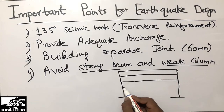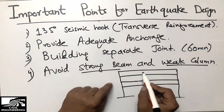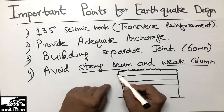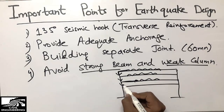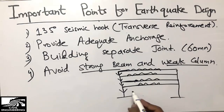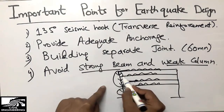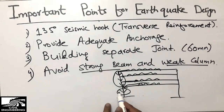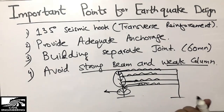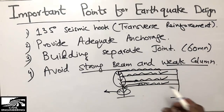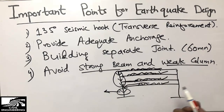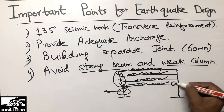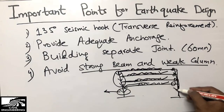In a multi-story building, the load from each beam is transferred to the column. As you go down, each column accumulates the load from all the beams and columns above it. So the lower columns carry the combined load of all the floors above, while each beam only carries the load from its own floor.